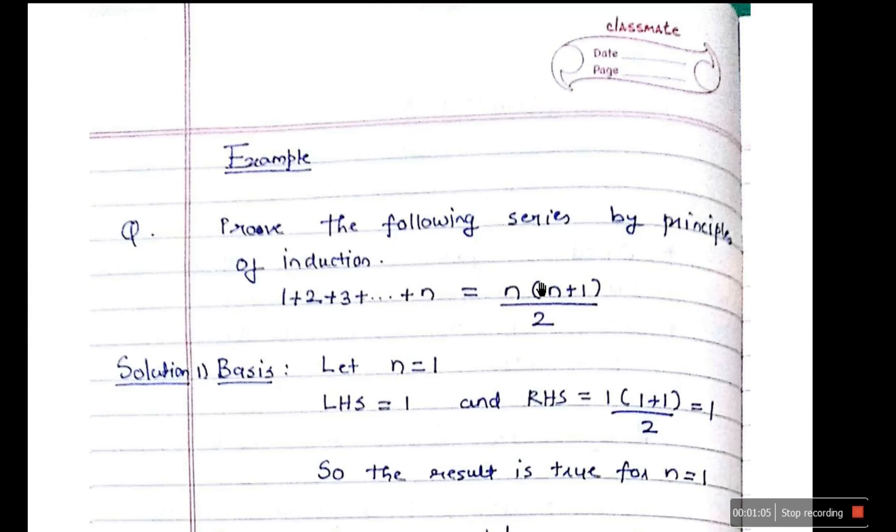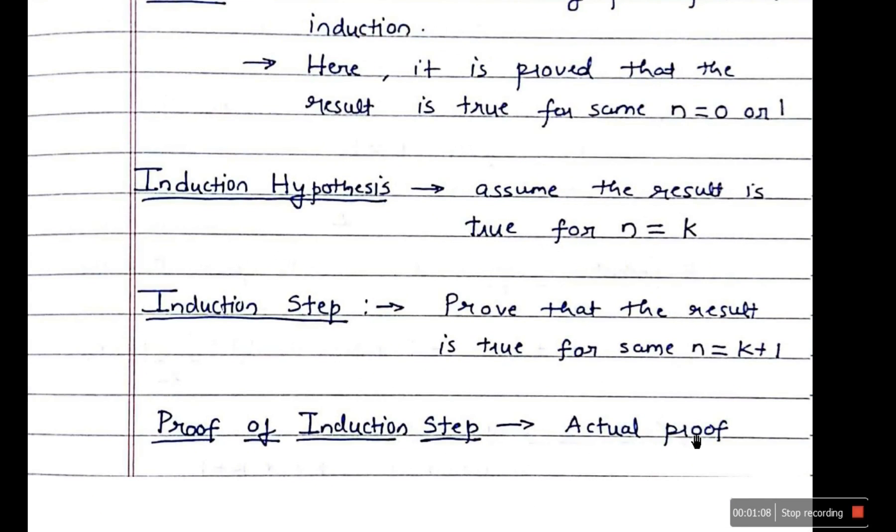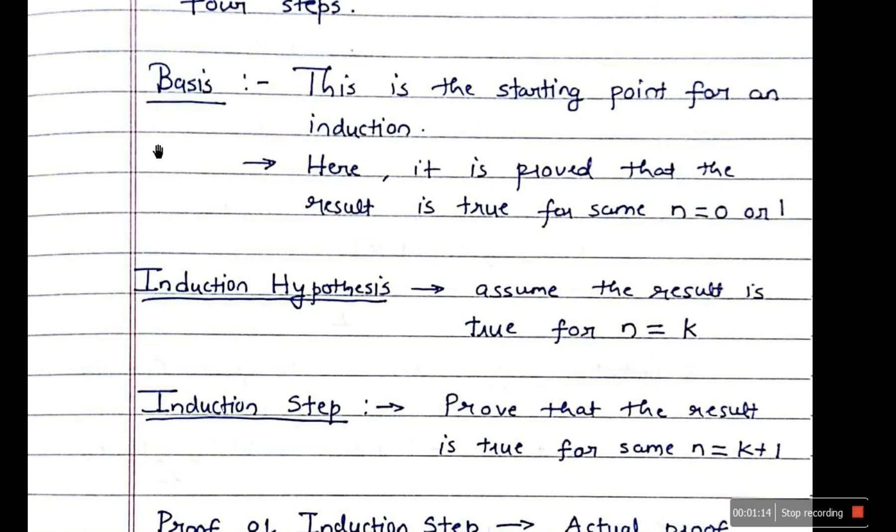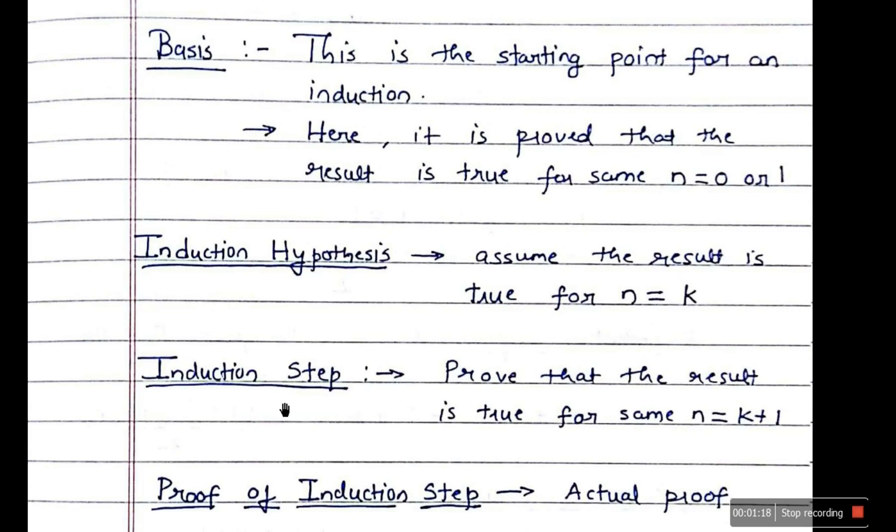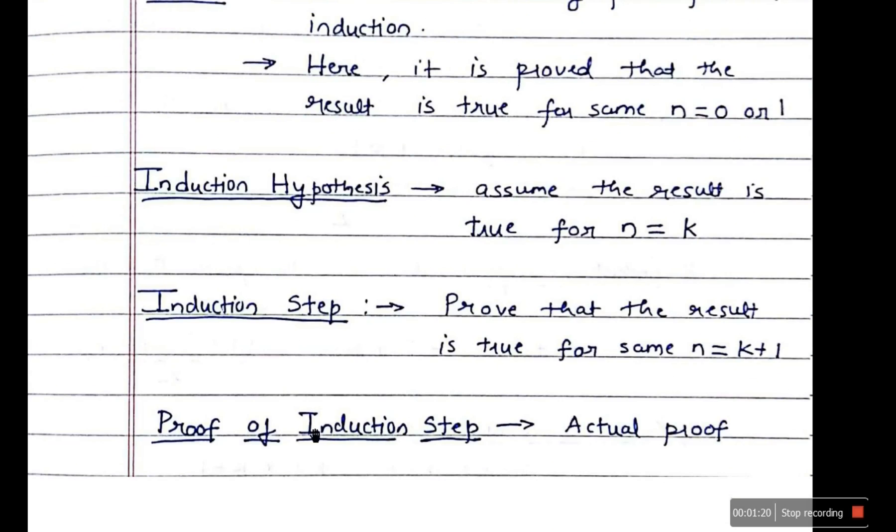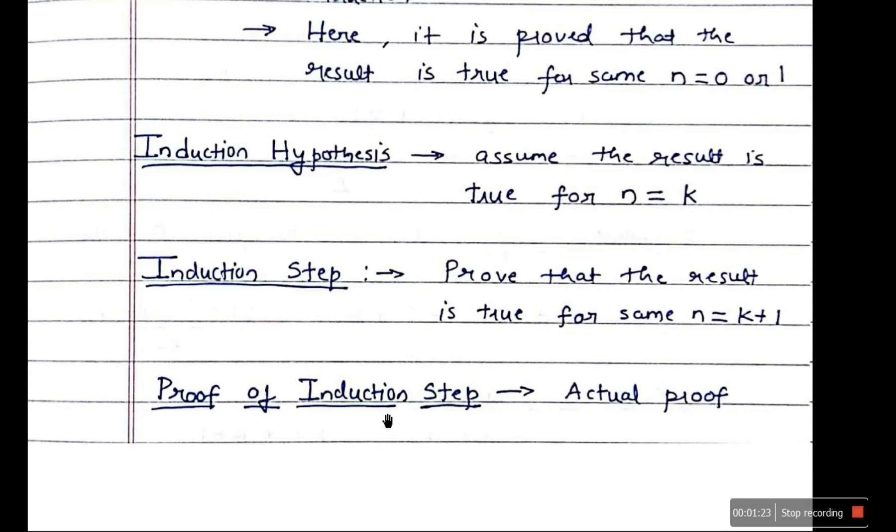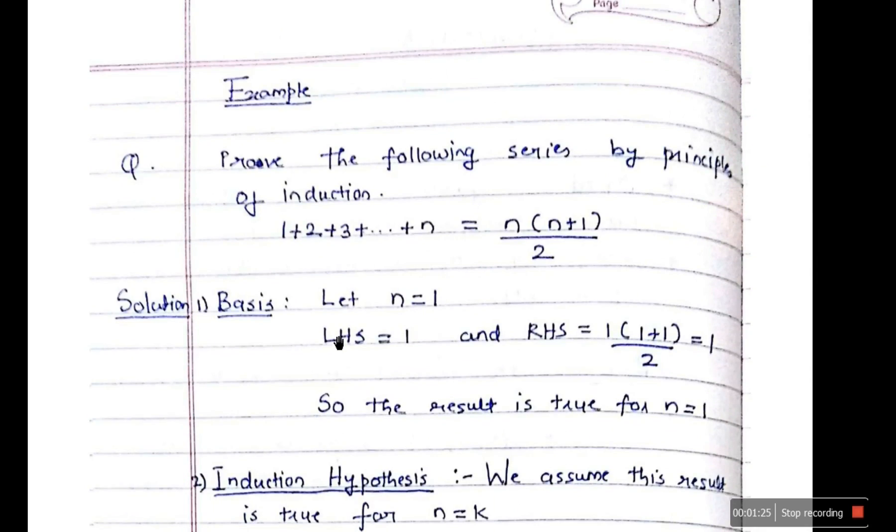And final step is called proof of induction step, where we actually prove that for n equal to k plus one, it is true. So the four steps are: first step is basis, second step is induction hypothesis, third step is induction step, and fourth step is called proof of induction step. Now we'll look at an example so you'll understand it better.